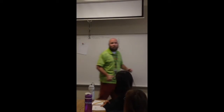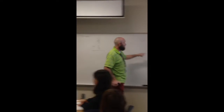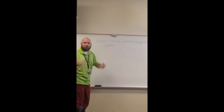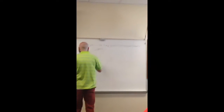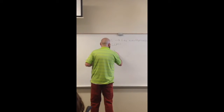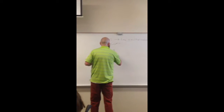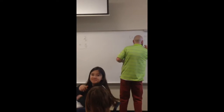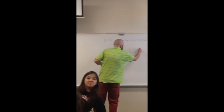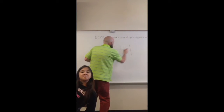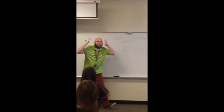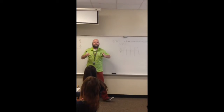Meaning, I have to find the least common multiple of both denominators. My denominators are 3 and 5. I'm going to make a multiplication chart of 3 and 5.